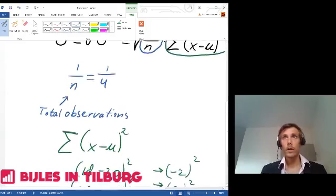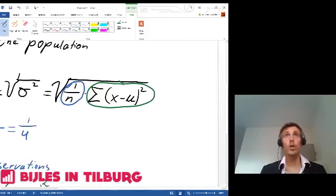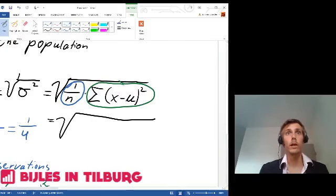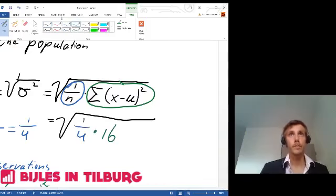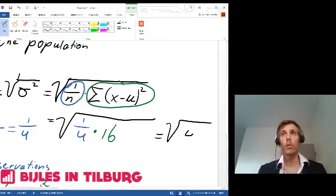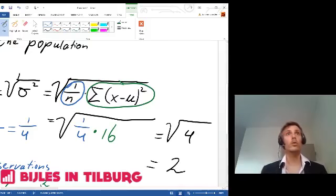Now we can go back to the main formula and fill in the numbers we found. It will equal the square root of the blue part, 1 divided by 4, times the green part, 16. This equals the square root of 4, which equals 2. So this is the official way to calculate it.